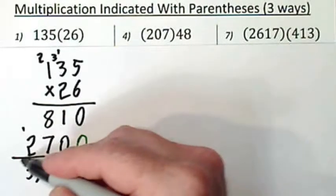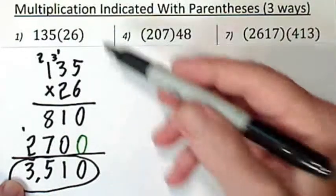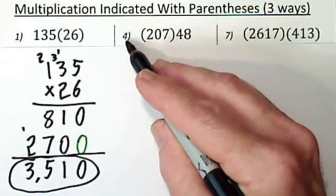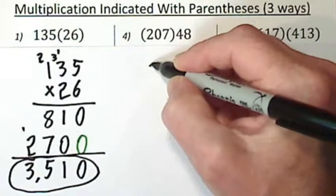So there's the product or the result of multiplication for the first one. Now this is number four on the worksheet. Again, I'll put the larger number on top.